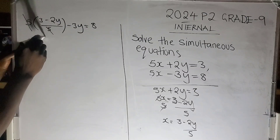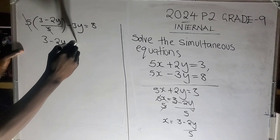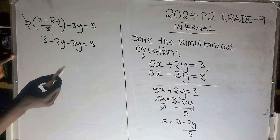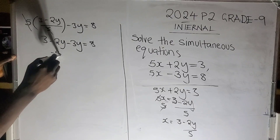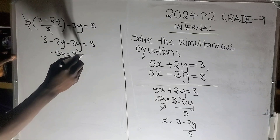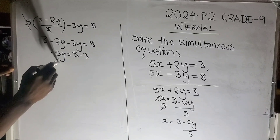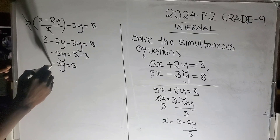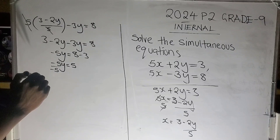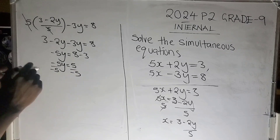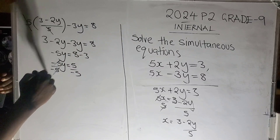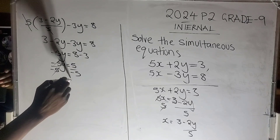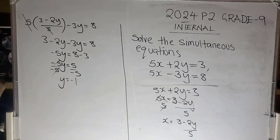The 5 and the 5 cancel, leaving us with 3 minus 2y minus 3y equals 8. Combining like terms: negative 2 minus 3 is negative 5y. So negative 5y equals 8, and the 3 goes to the other side becoming minus 3. So negative 5y equals 8 minus 3, which is 5. Divide both sides by negative 5, and y equals negative 1.